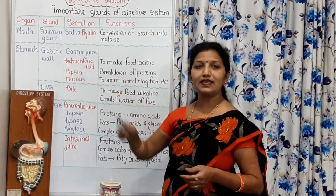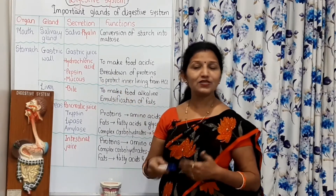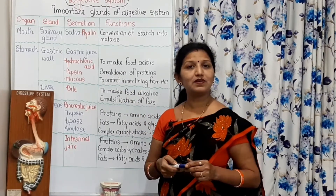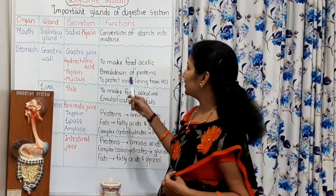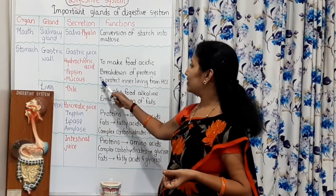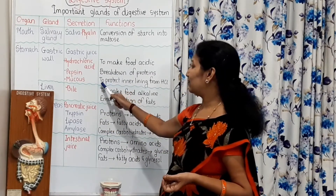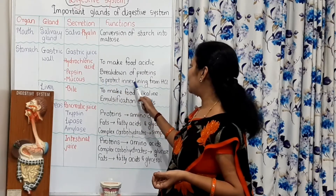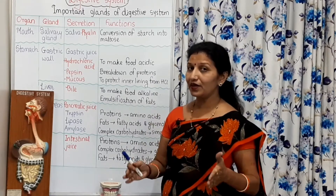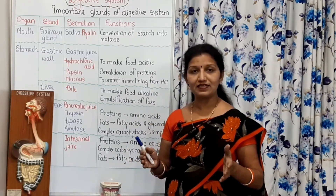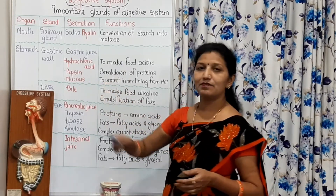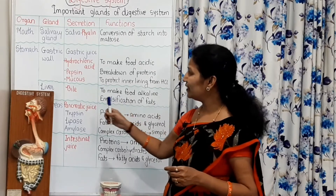Pepsin acts on proteins and is responsible for the breakdown of proteins. Then mucus — mucus is a sticky substance. Its function is to protect the inner lining from hydrochloric acid, as the acid may cause damage to the inner linings of the gastric wall, and that protection is provided by the mucus.